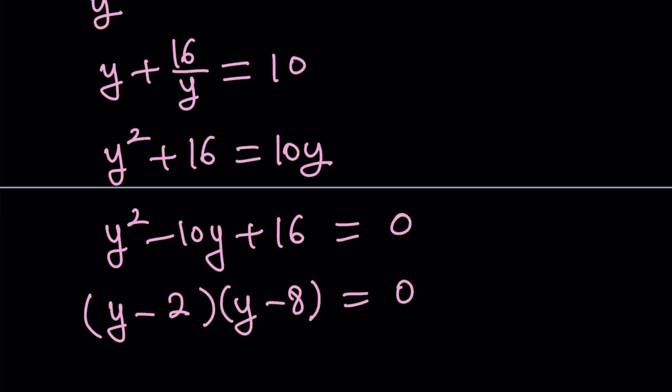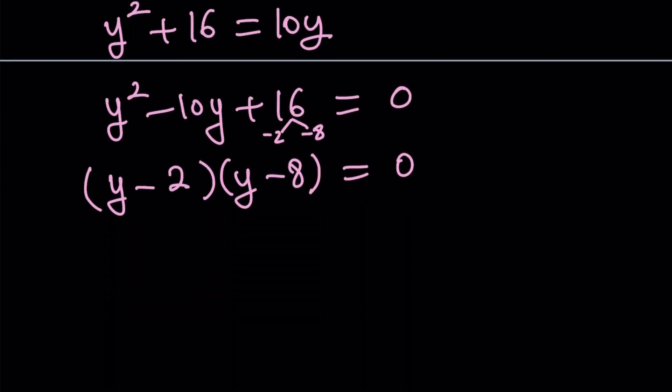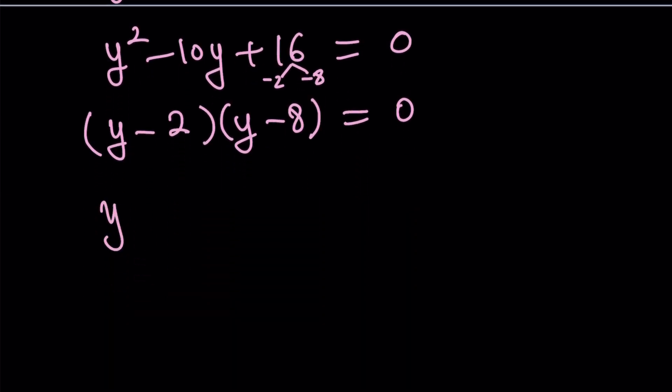Remember, you're looking for two numbers whose product is 16 and whose sum is negative 10. Those numbers are negative 2 and negative 8. From here we get y equals 2 or y equals 8.